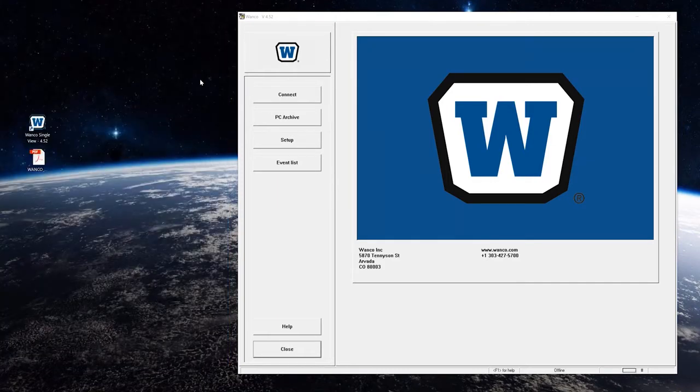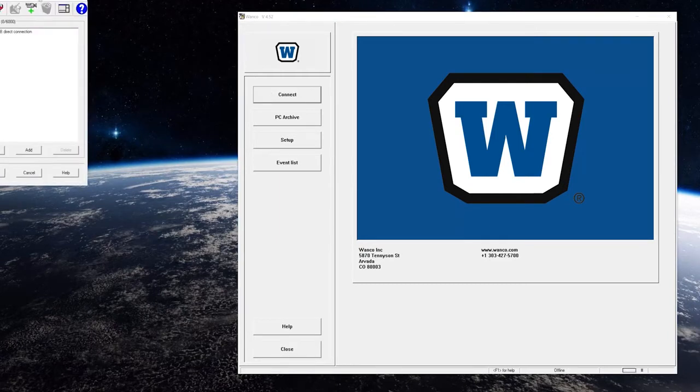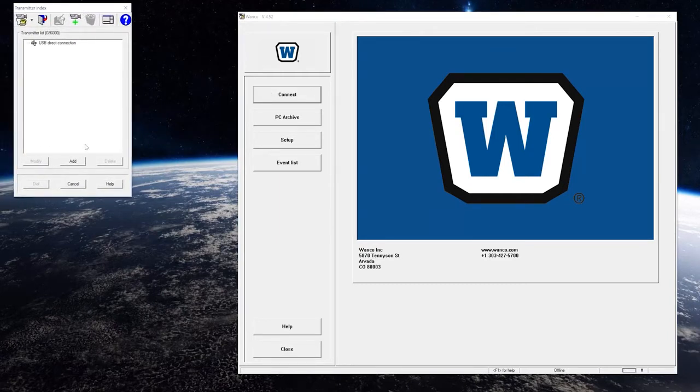Now that we have our IP number ready and we're going to add the camera into our software, we're going to hit Connect. After Connect, the pop-up box shows up and we're going to hit Add to add a new camera. And we're going to add a new transmitter - that's what we need to do first is add new transmitter.